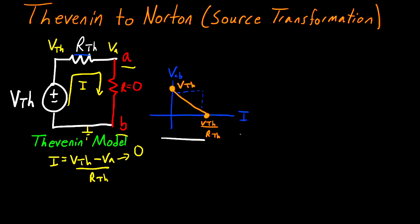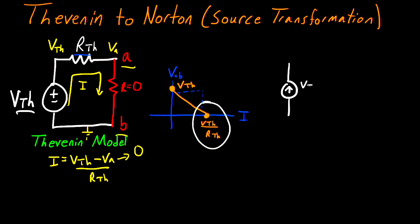This is where the Norton model comes in. Instead of using a voltage source, it uses a current source. The value we're going to give this current source is going to be equal to the short-circuit current point on our graph, so we can say this current source is V_Thevenin divided by R_Thevenin. That lets us get this point on our graph, but we still have to make sure we're able to get the open-circuit voltage point as well.